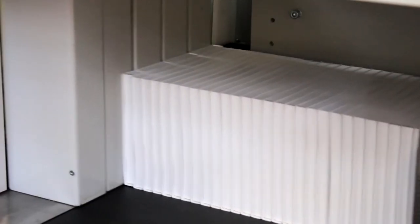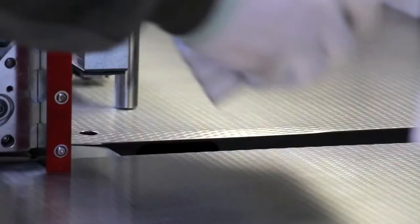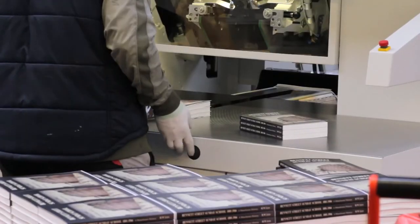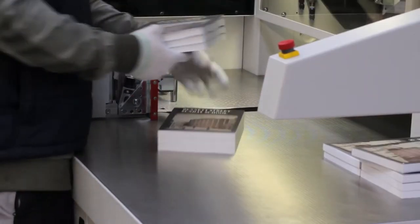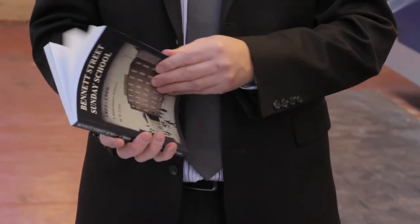We then have an oversized perfect bound book. The oversized book then goes through the three knife trimmer which takes off the three edges. We then have a finished perfect bound book.